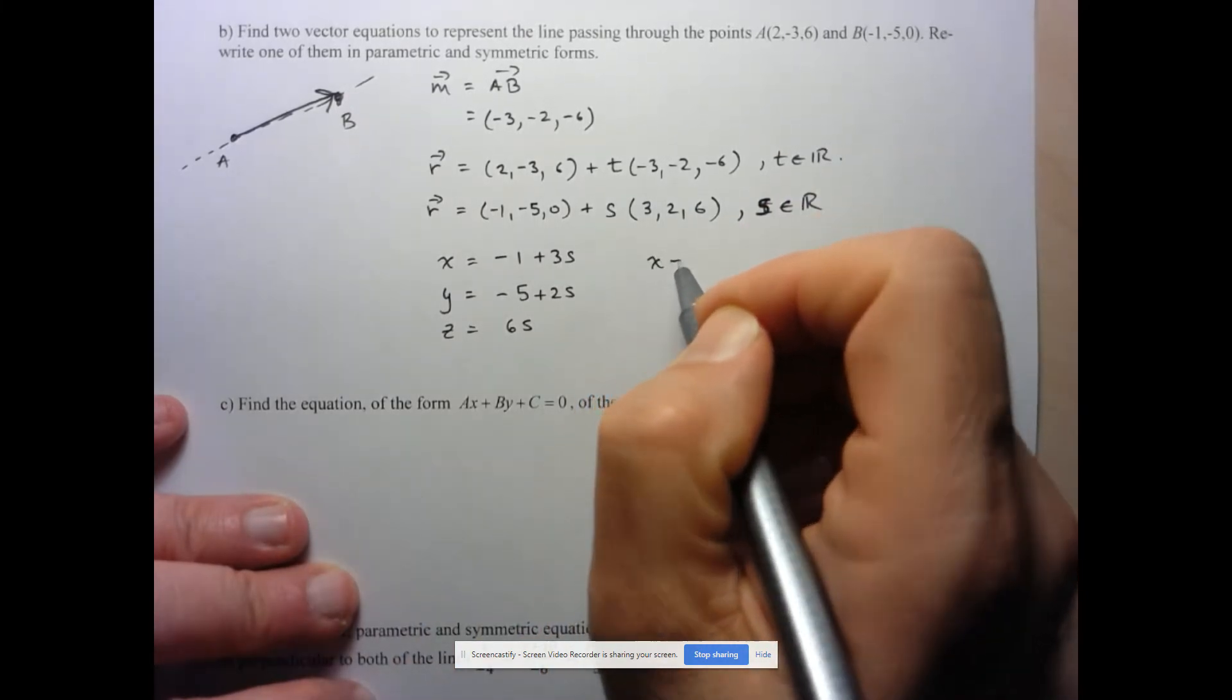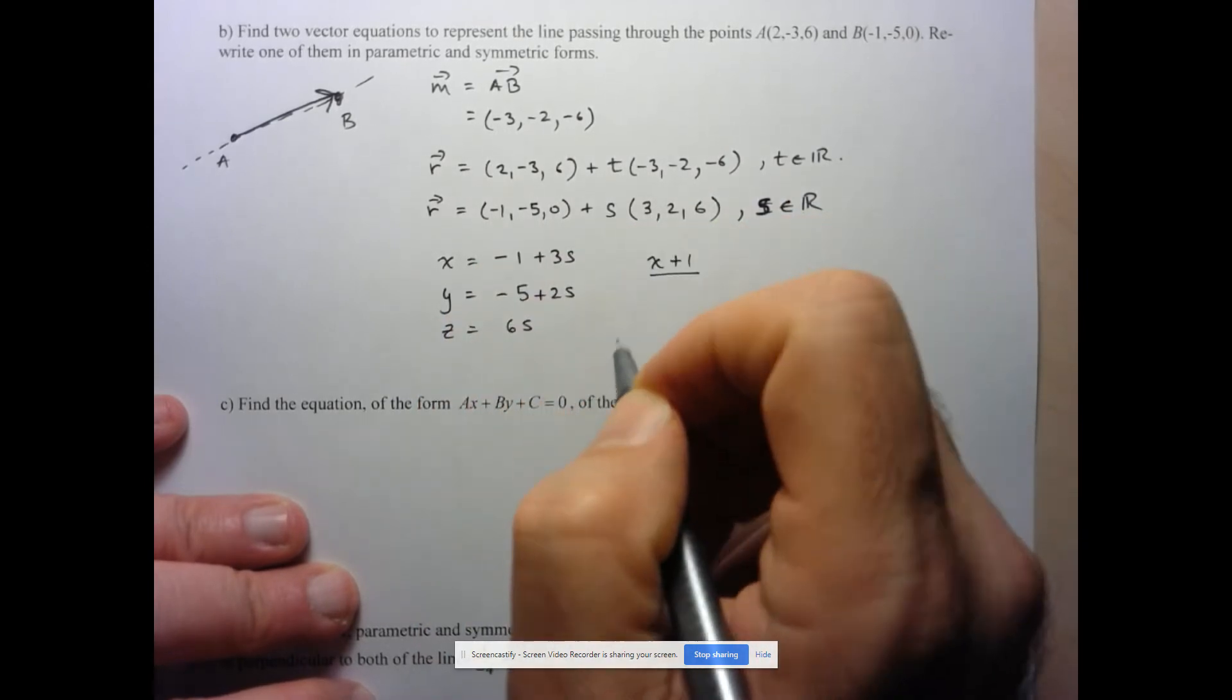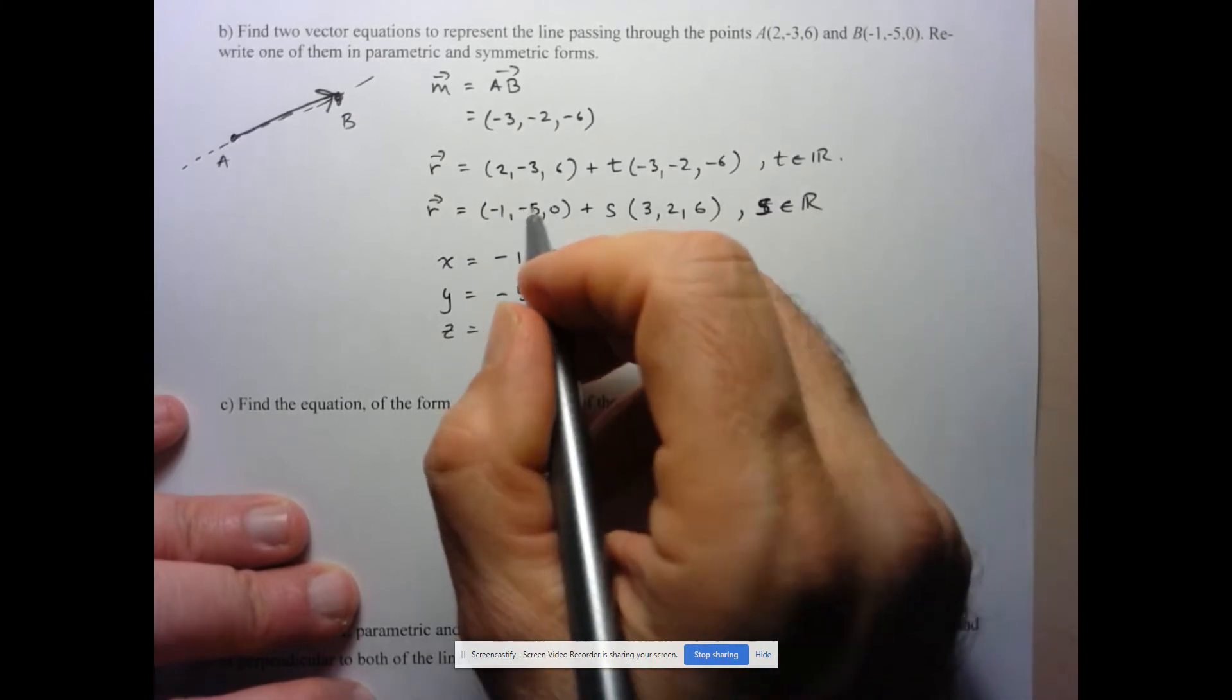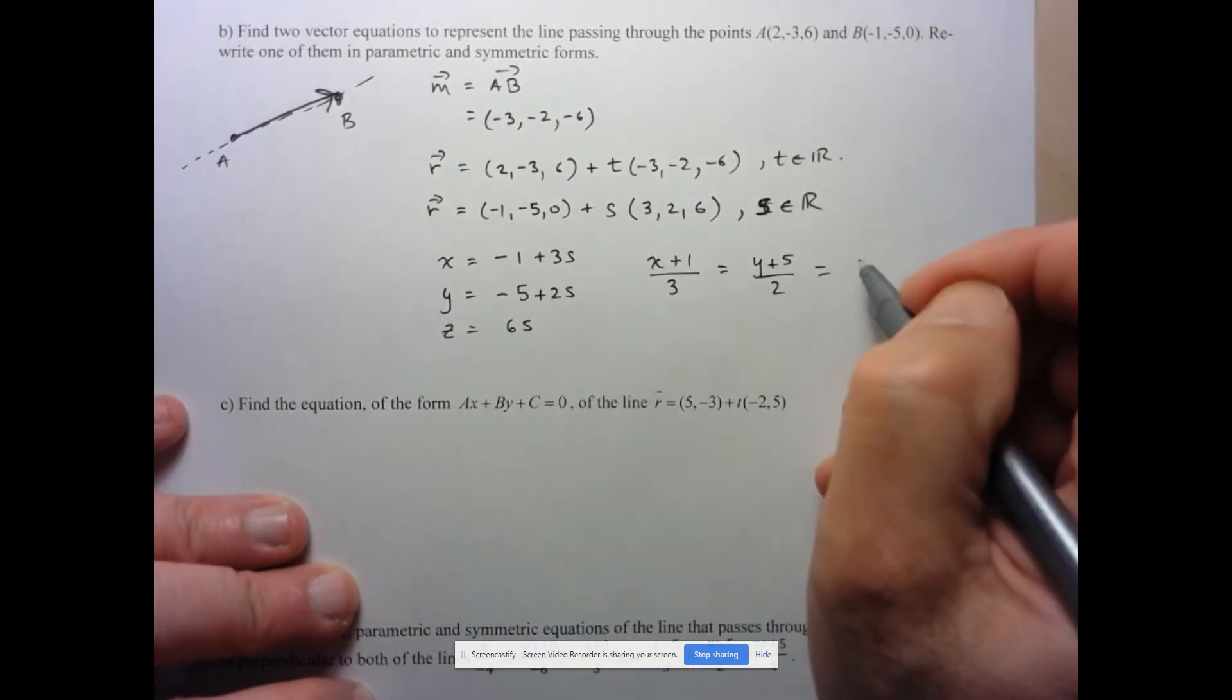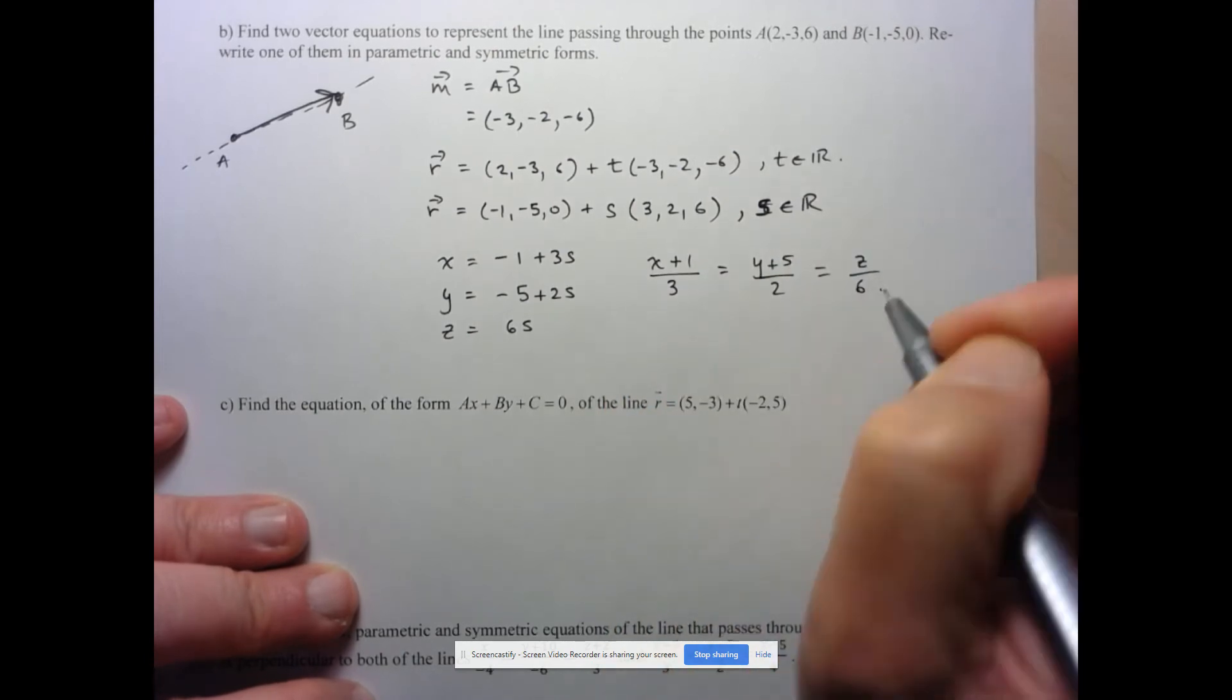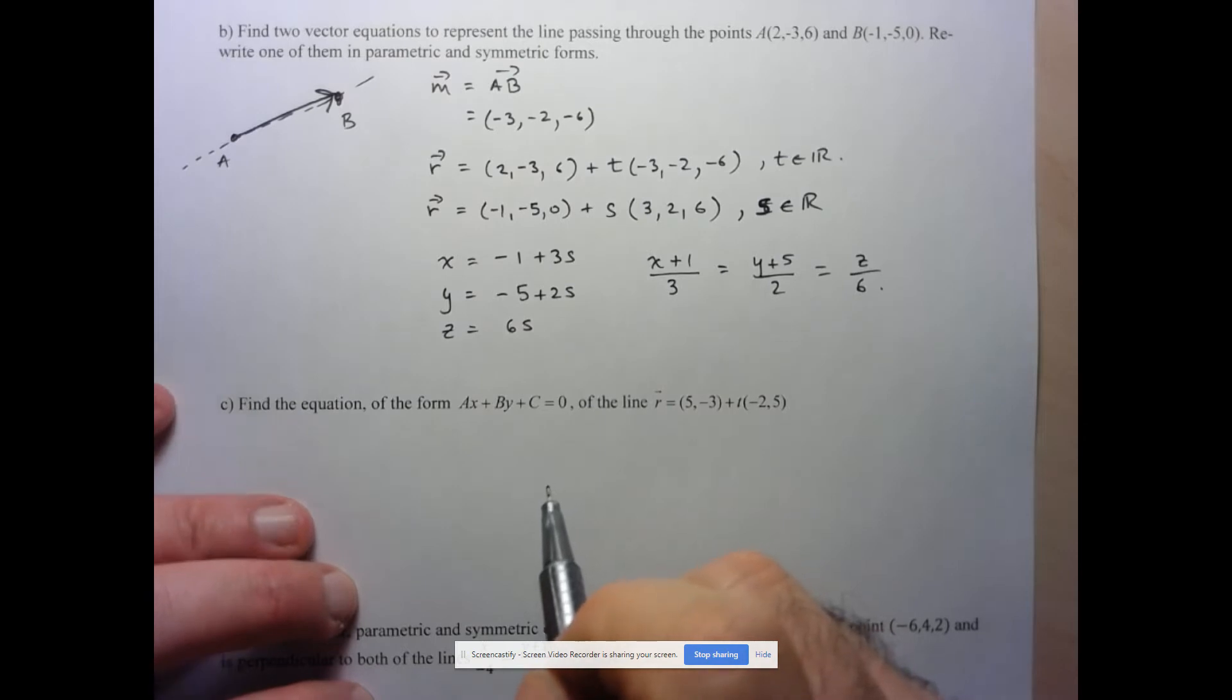And if I want to write in symmetric form, well, it's X minus X naught, so X minus negative 1, X plus 1 over the X component of my direction vector 3 equals Y minus negative 5, so Y plus 5 over 2, and is equal to Z minus 0, so Z over the Z component of the direction vector, 6. So this is the equation in symmetric form.